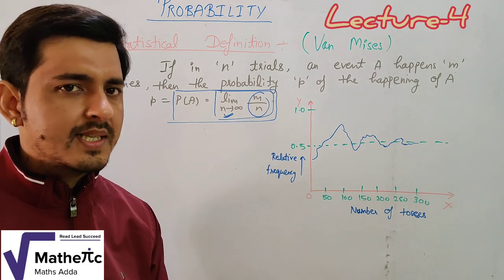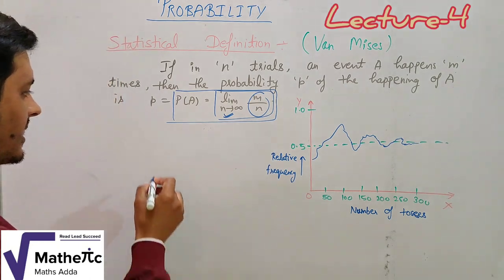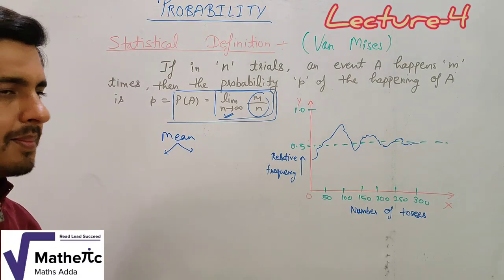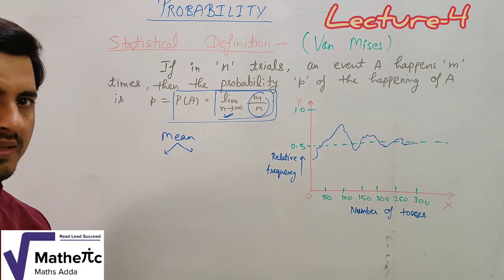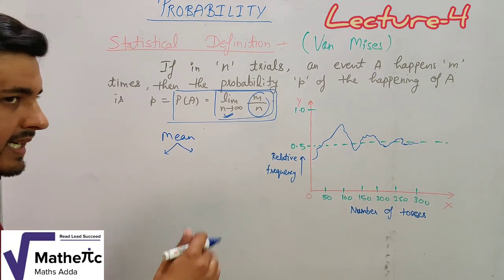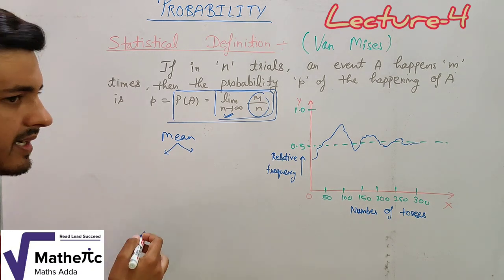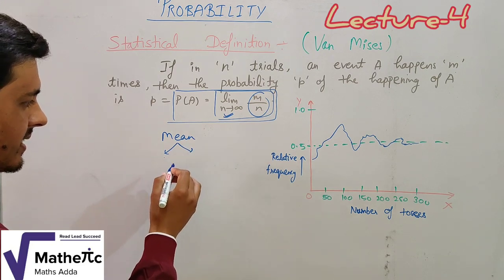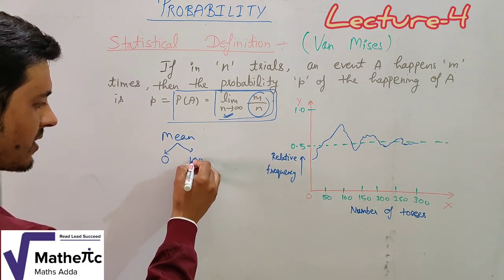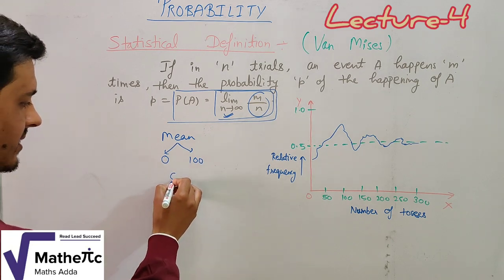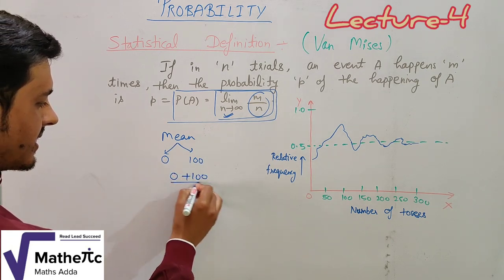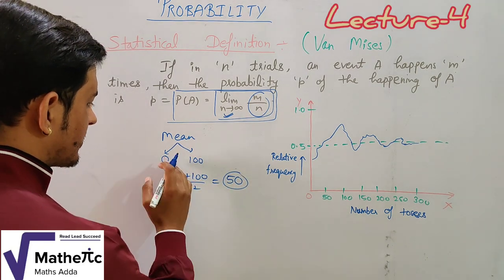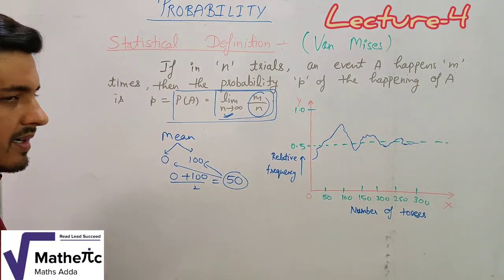Let me explain the concept of a statistical mean with an example. Suppose we have a test of 100 marks in this class. One student scores 0 marks and another scores 100 marks. The mean is 0 plus 100 divided by 2, which gives 50. But what does a mean of 50 actually tell us? It suggests students scored around 50, but neither student actually scored 50.